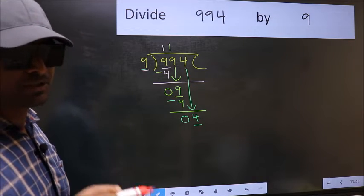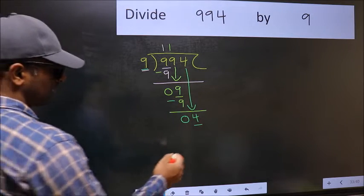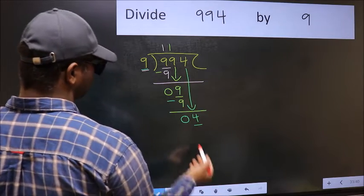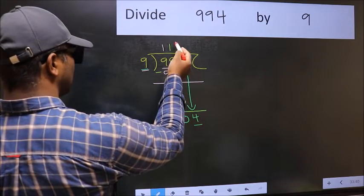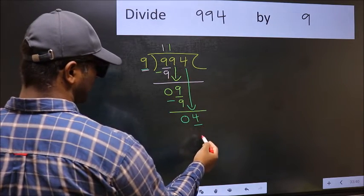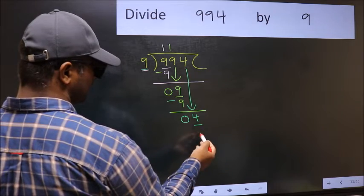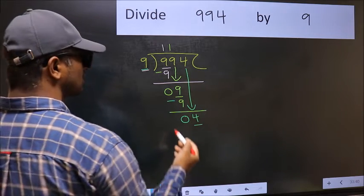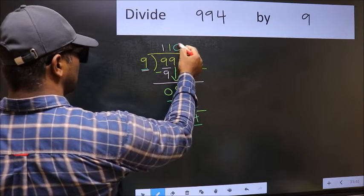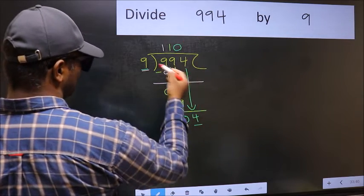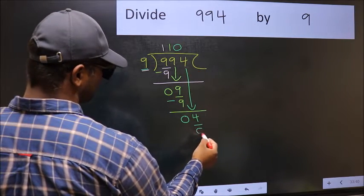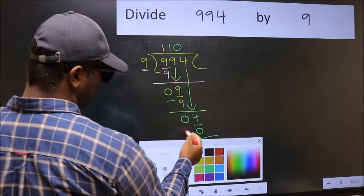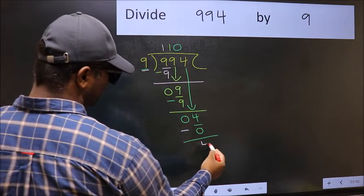Instead, what you should think of doing is: which number should we take here? If I take 1, we will get 9, but 9 is larger than 4. So what we should do is take 0. So 9 into 0 is 0. Now you should subtract: 4 minus 0 is 4.